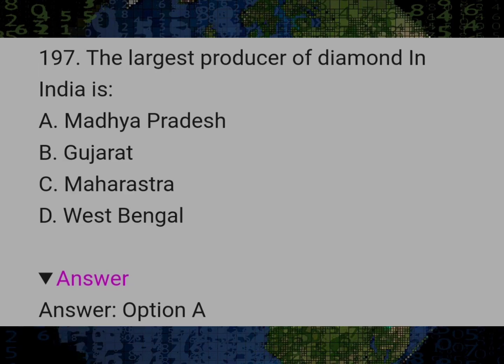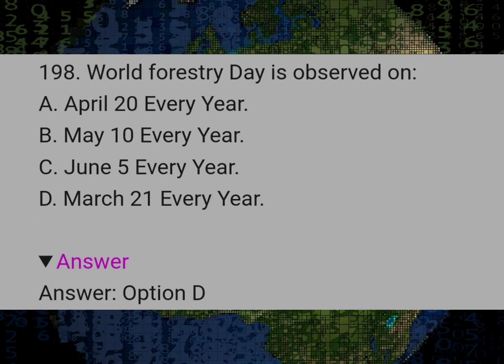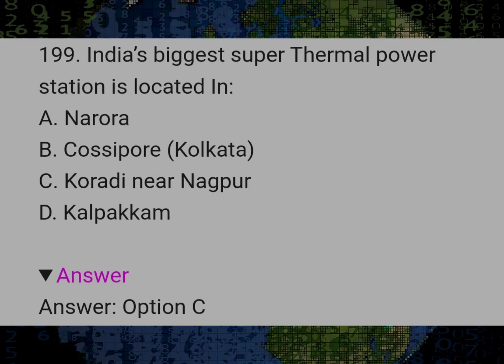The largest producer of diamond in India is? Answer A: Madhya Pradesh. World Forestry Day is observed on? Answer D: March 21 every year. India's biggest super thermal power station is located in? Answer C: Koradi near Nagpur.